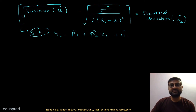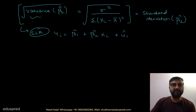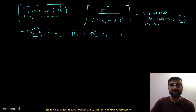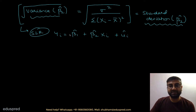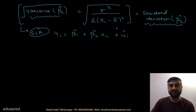In your textbook, you must have always seen the term standard error of beta 2 hat. So if we know the formula for variance of beta 2 hat and we know what the formula for standard deviation of beta 2 hat is, then why do we work with standard error of beta 2 hat, and what's the difference between them?